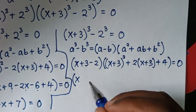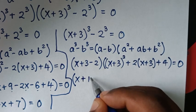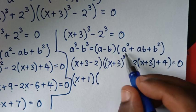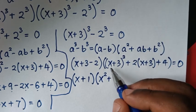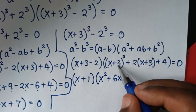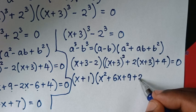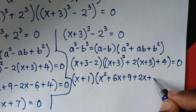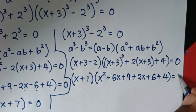So x + 3 minus 2 gives x + 1. Expanding (x + 3)²: x² + 6x + 9. Then plus 2(x + 3) gives plus 2x plus 6. Plus 4 equals 0. Simplifying: x² + 8x and 9 + 6 + 4 is 19.